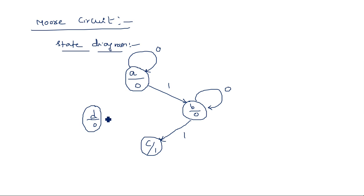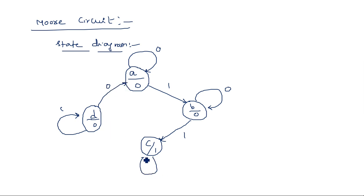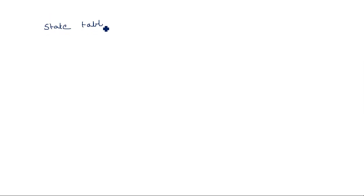That is why it is called a Moore circuit — Moore depends only on the present state of the flip-flop, not on the input. For state C, output is 1: when input is 1 it stays in the same state; when input is 0, it goes to the next state. For state D, output is 0. Using this, we can easily draw the state table of the Moore circuit.